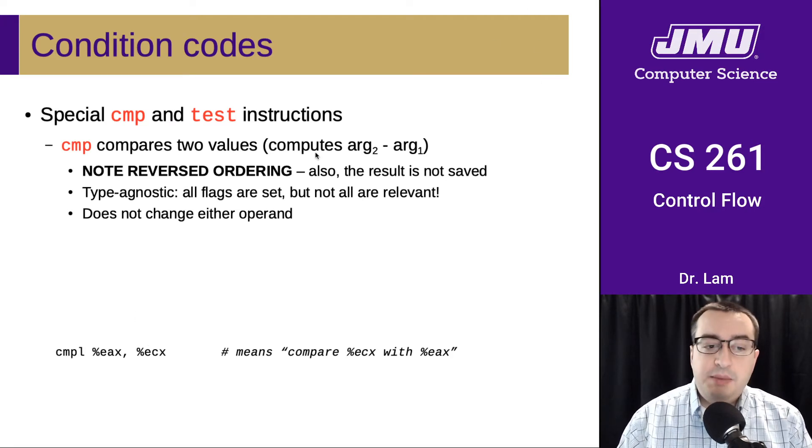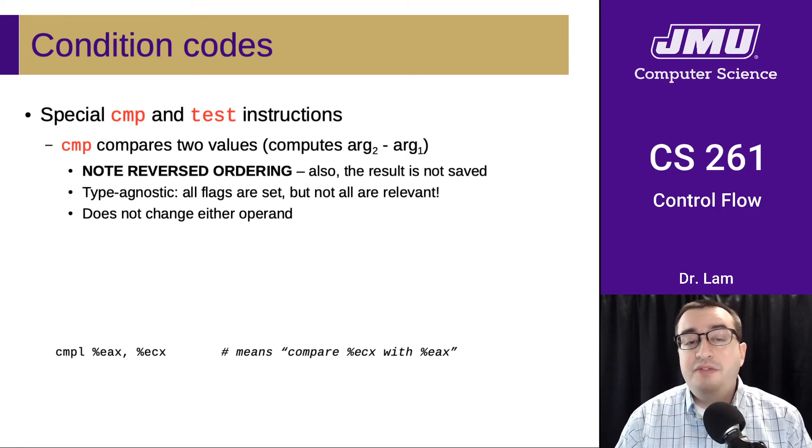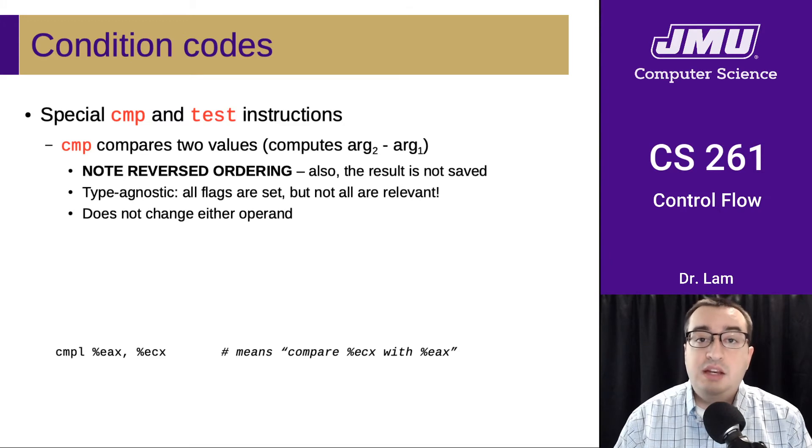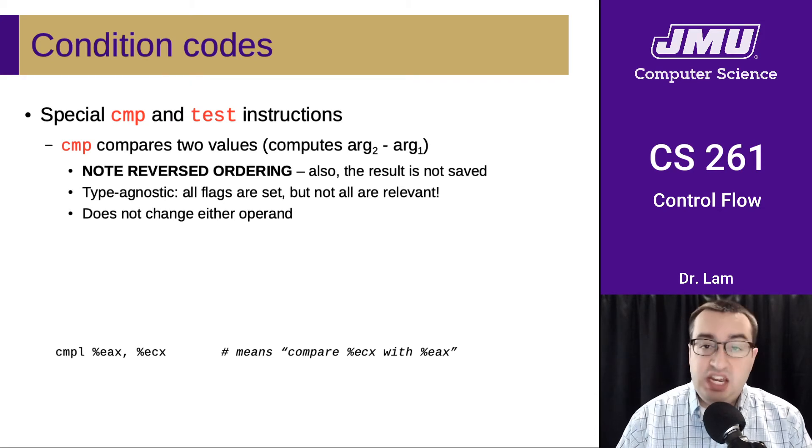Note that this is type agnostic. It doesn't really matter whether these are signed or unsigned numbers. It's going to do the same operation regardless and set all of the flags regardless of whether it was actually signed data or not. This is why it's important for you to do the correct jump instruction. Another important thing to notice about the compare is that it doesn't actually change either operand. So this is kind of a non-destructive comparison.